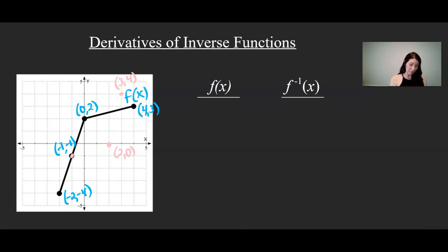The point negative 1, negative 1, guess what? That's gonna stay exactly where it is, because if we switch the x and y coordinates, the point does not change. And then let's see, the point negative 2, negative 4 will change to negative 4, negative 2 on the inverse function. And let's go ahead and connect those points.